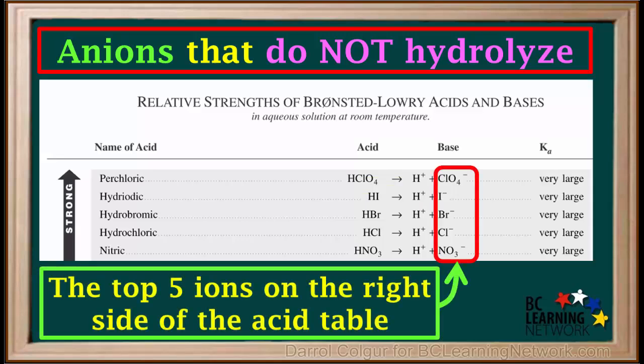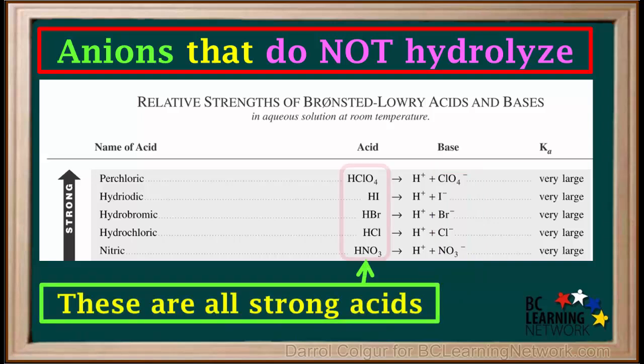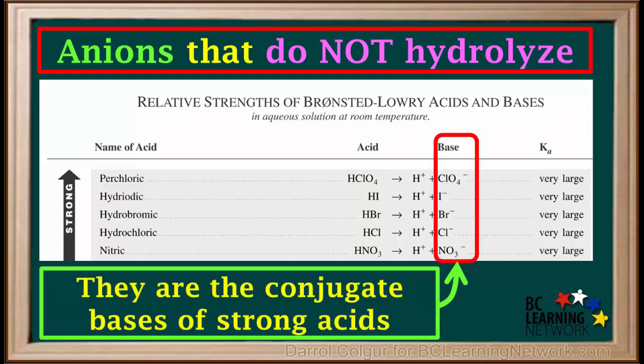Anions that do not hydrolyze or undergo hydrolysis are the top five ions on the right side of the acid table. Remember, these are all strong acids. So these ions are the conjugate bases of strong acids.